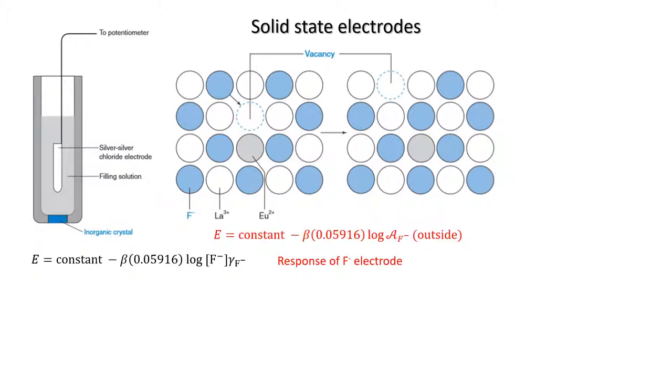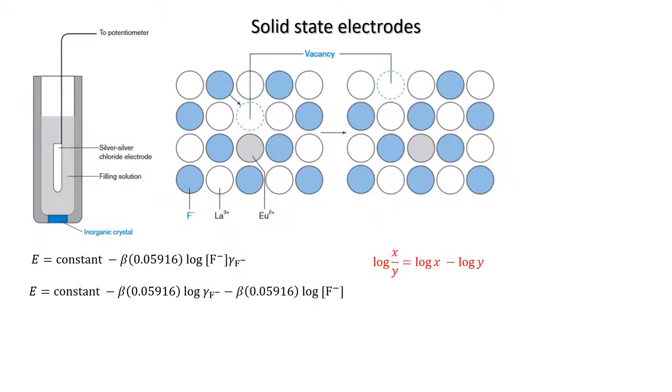As all other potentials are fixed, we can derive an equation to relate the potential response to fluoride ion activity in the same way we did for the pH electrode.